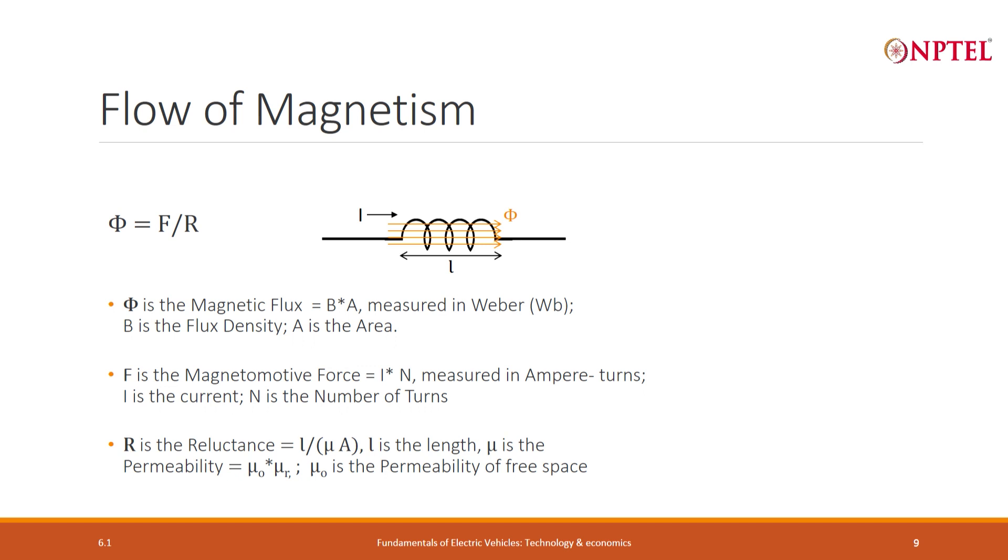The same Ohm's law: phi is equal to F by R, where phi is the magnetic flux, F is the magnetomotive force, and R is the reluctance.